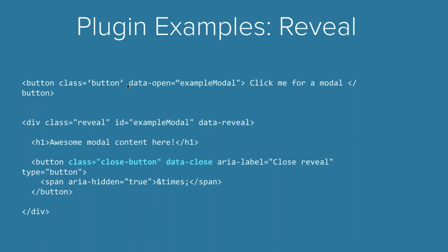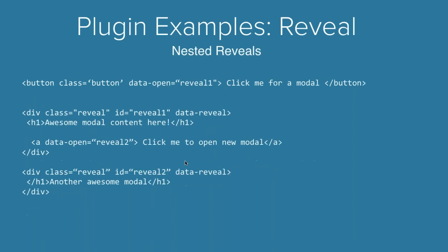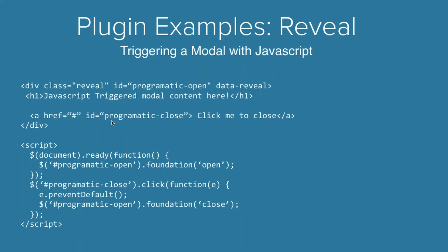For targeting, we use IDs — we don't use IDs for style, we always use them for targeting. So something like data-open points to an ID, that's how we open it. Some more advanced examples: you can do nested modals, which are as simple as opening a second modal from the first one. Foundation will take care of closing your first one for you. You can also trigger modals with JavaScript — a common example is waiting 10 seconds and then opening a newsletter signup modal.